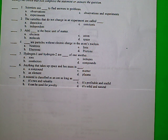7. A mineral is classified as an ore as long as blank. A. It's rare and valuable, B. It can be used for jewelry, C. It's profitable and useful, D. It's solid and natural.